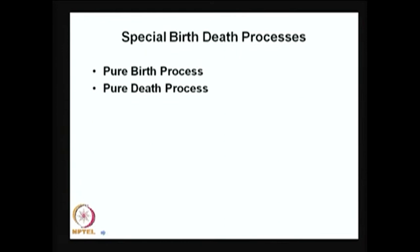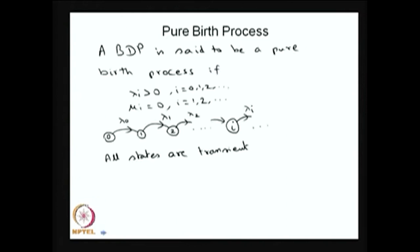As a special case of the birth-death process, I am going to discuss the pure birth and pure death processes. In a pure birth process, all death rates are 0: the lambda_i's are greater than 0 and mu_i's are 0. A special case of the pure birth process where lambda_i's are constant — equal to lambda — is the Poisson process, which will be discussed in the next lecture. In this pure birth process, the lambda_i's are functions of i, and here all states are transient states.